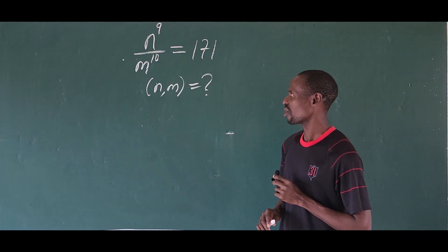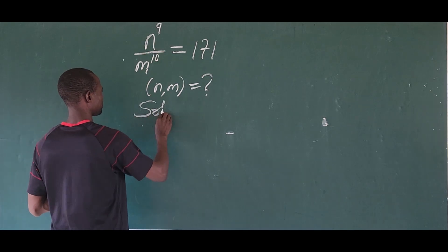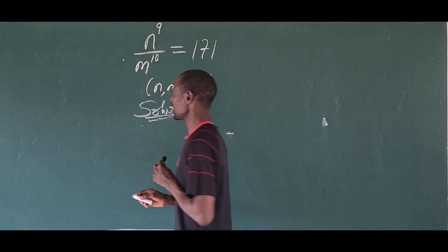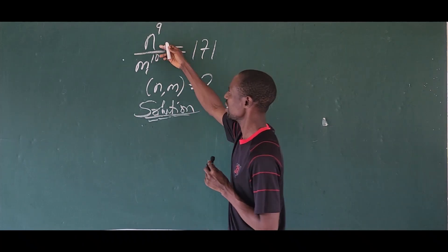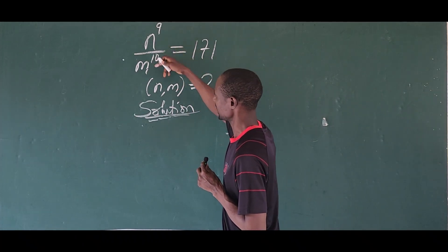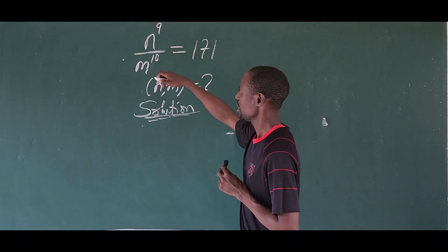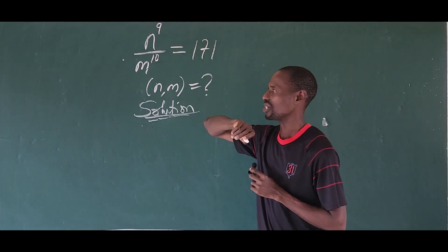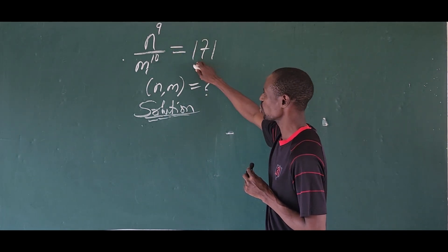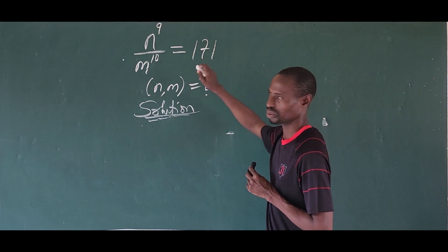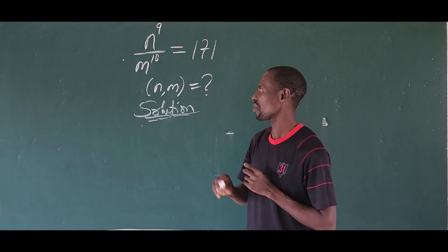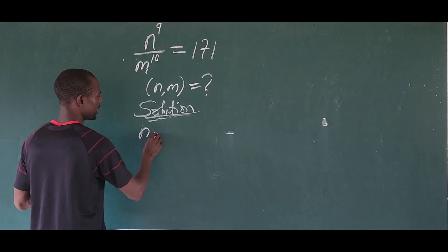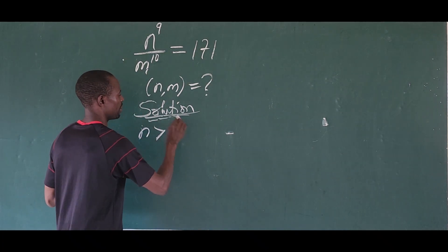So how do we solve for this? Let's take our first solution. If you check out this question, we are having n to the power of 9 and m to the power of 10. The denominator power is greater than our numerator power. But the result is 171, which is positive. So what does that imply? It means that our n is greater than our m.